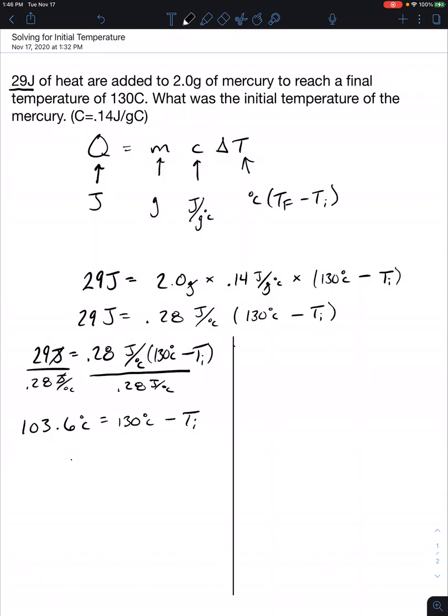Now our next step would be to subtract 130 degrees Celsius from both sides. So when we do that you're going to get negative 26.4 degrees Celsius is equal to the negative initial temperature. Remember you can't have a negative variable so we're just going to flip the signs on both sides and write our final answer. That's 26.4 degrees Celsius equals the initial temperature Ti and that would be our final answer.